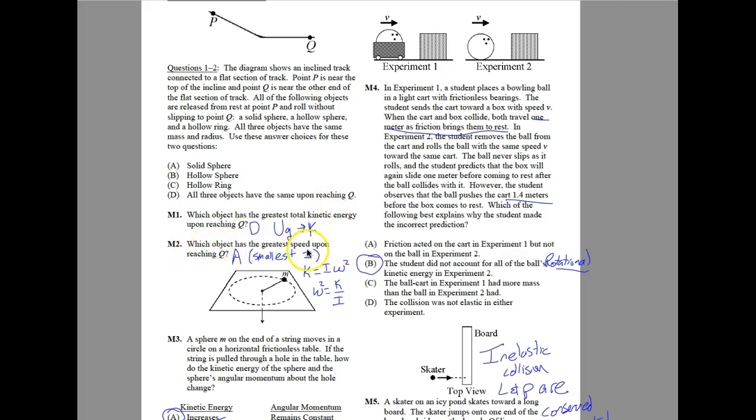For number two, it says which object has the greatest speed upon reaching Q, and that would be A. A has the smallest moment of inertia by moment of inertia equations.